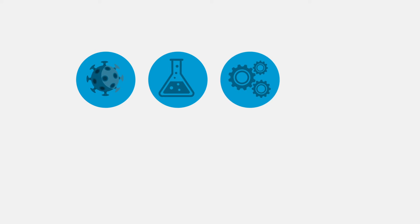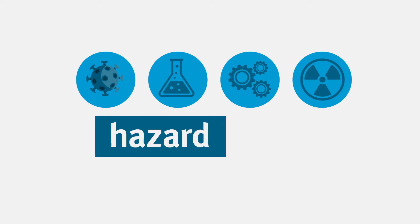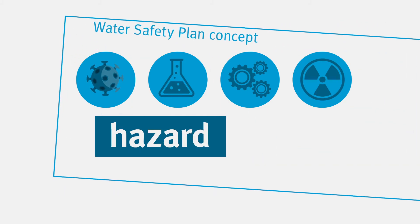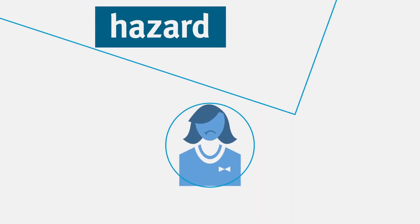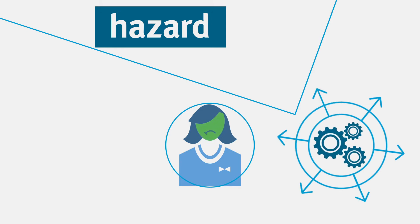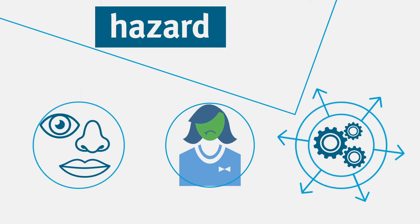Any biological, chemical, physical, or radiological degradation in the supply system constitutes a hazard to water quality under the Water Safety Plan concept. Hazards in drinking water can harm the health of consumers, hinder the technical security of supply, or change the sensory properties of drinking water, such as colour, odour, and taste.